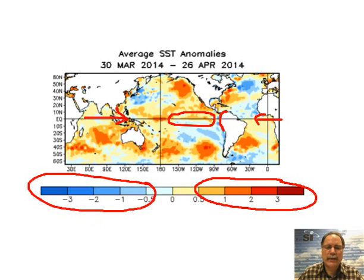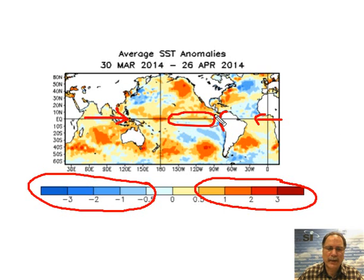A couple of other reasons why El Niño is predicted: sea surface temperatures just below the surface are also above normal, indicating the potential for El Niño, and this particular area has seen increased temperatures relative to normal much more than the surrounding areas over the last several weeks. There are strong reasons to believe that El Niño will in fact form over the next few months, and that'll play a pivotal role in the Atlantic tropical season.